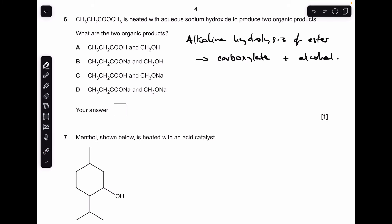Number six is testing our knowledge of alkaline hydrolysis of esters. So there's just a reminder that that reaction generates a carboxylate and an alcohol. So we can rule out C and D straight away because neither of these reactions have made the alcohol. You can see A and B both generate alcohols, but which one's got the carboxylate in? B has. So B is the answer.